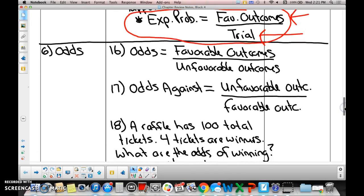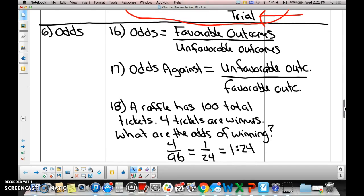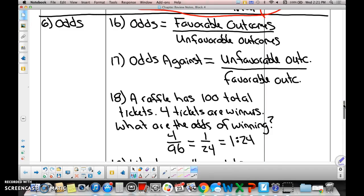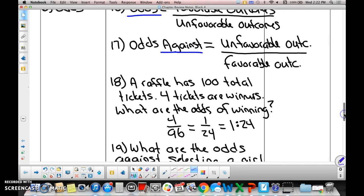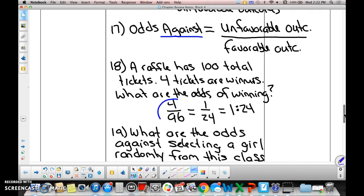Number six, odds. You got both the formulas? Odds in favor, odds against. By the way, this one right here just says odds - that is odds in favor. If they want you to calculate odds against, it will actually say, what are the odds against? Do you reduce odds? Yeah. If you get odds like four over 96, can it be reduced? Yes.